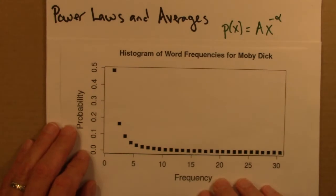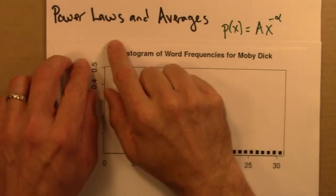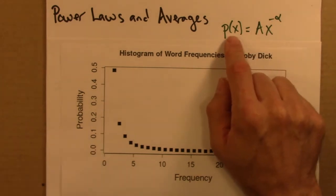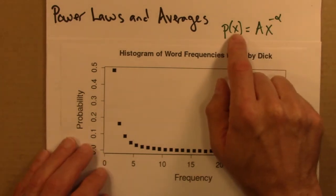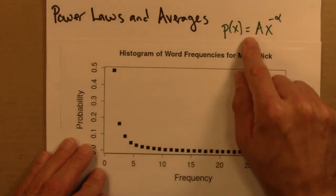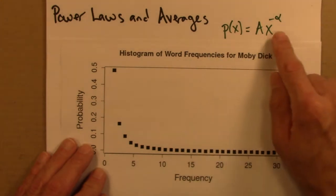So let's bring the discussion back to power laws. Reminder that a power law distribution is of this form. It says that the probability or probability density for x to take on a particular value is given by this function. It's a power law because it's the variable x raised to some power.